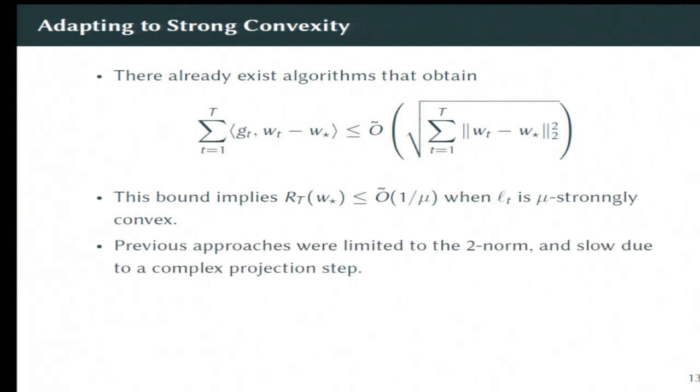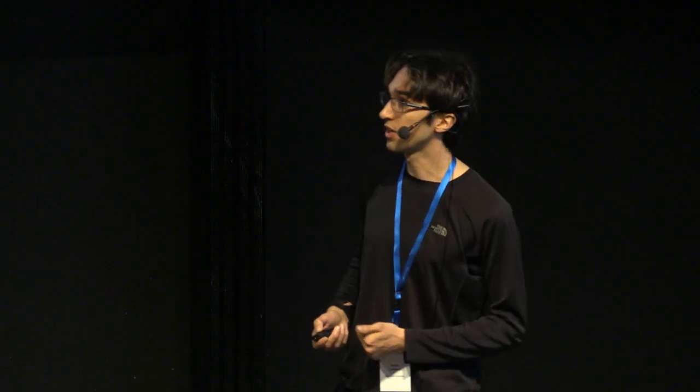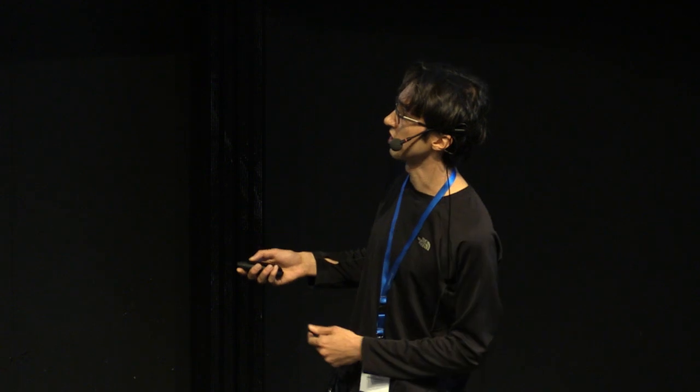However, the problem isn't solved quite yet because, A, we are limited to the two-norm using previous algorithms, and B, these algorithms are actually kind of slow. They involve sort of a very tricky projection step that may take up all of your computation time. So what we do is we take arguments for this type of algorithm and we apply our reductions to them. We can use the 1D to Banach space reduction to remove the two-norm issue, and we can use our fast exp-concave algorithm to a fast constraint set to remove the projection step that's slow.